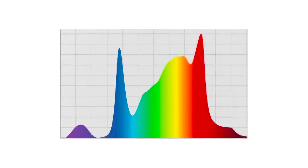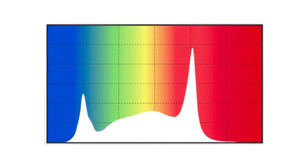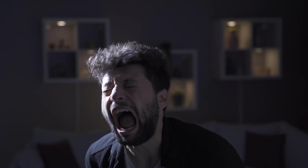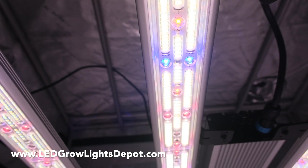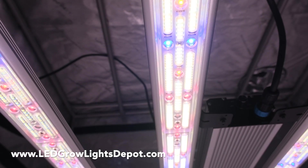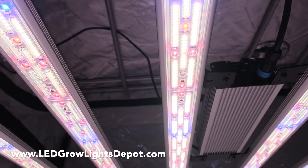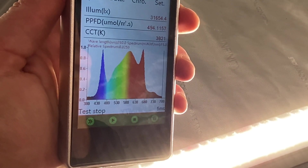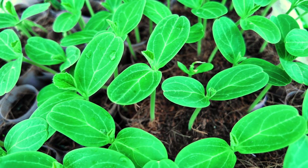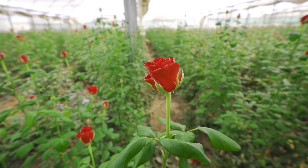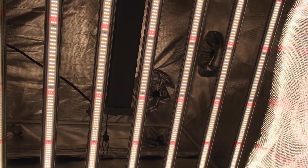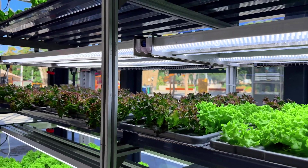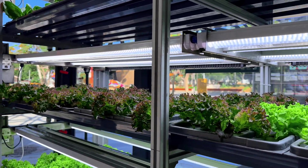Are you struggling to figure out the best light spectrum for your plants? Well, you're not alone. Many growers feel overwhelmed by the options. In this video, we'll simplify what you need to know to choose a perfect spectrum for your indoor garden, discover how different wavelengths can supercharge your plant's growth from seed germination to flowering, and learn about the different types of LED grow light spectrums. Get ready for practical tips that will make your plants thrive like never before.